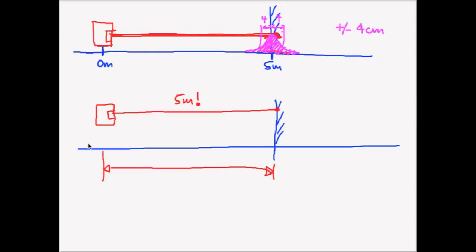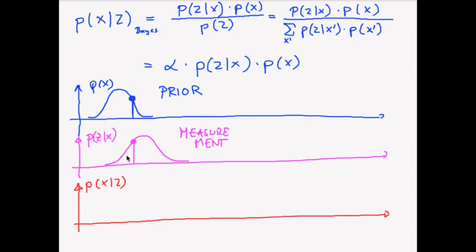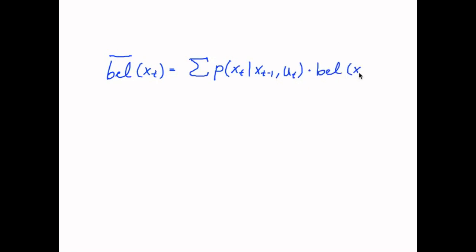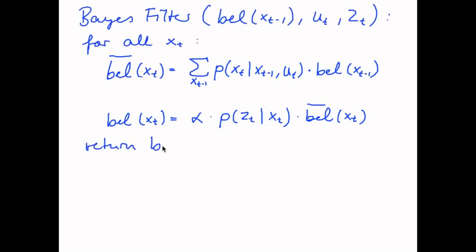Then we will have a look at measurements where we will conclude that they have the opposite effect. They reduce the uncertainty in the robot's state. Combining a movement or prediction step with a measurement or correction step, we introduce a filter called the Bayes filter.